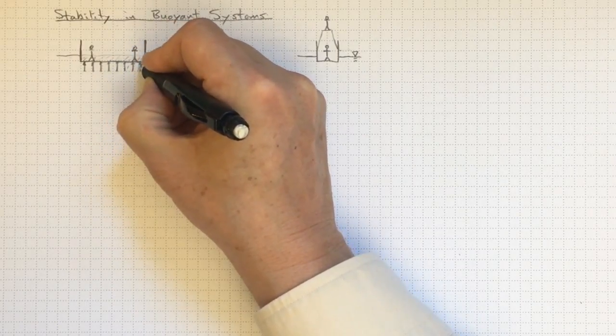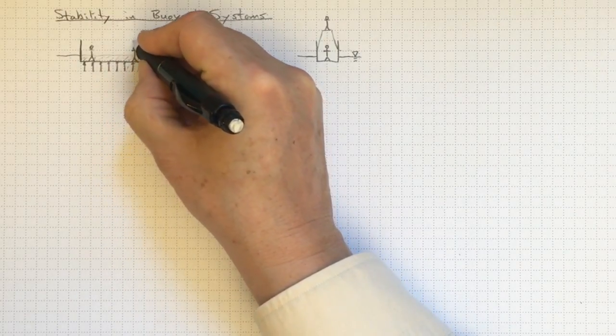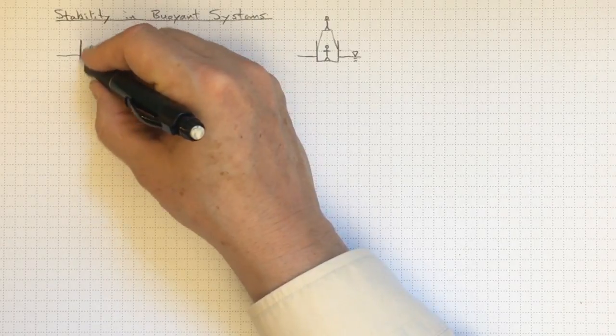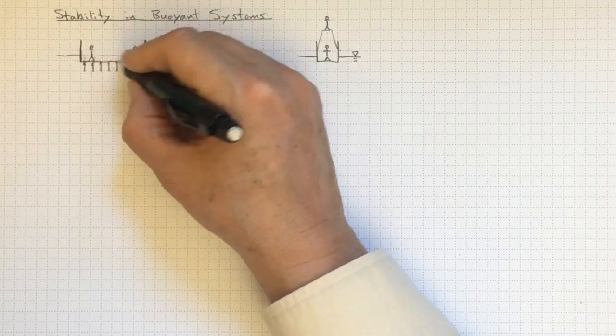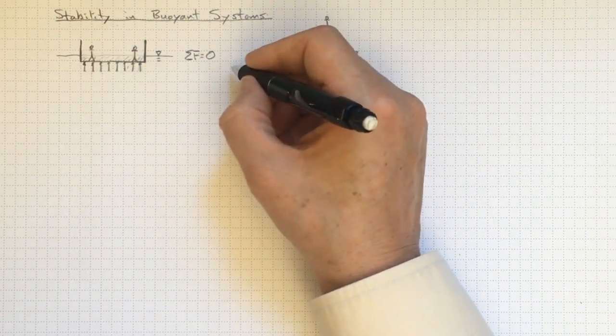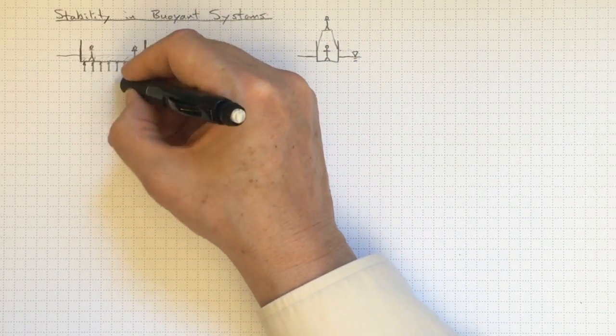There's some positive pressure force acting up, producing buoyancy. And there's some negative gravitational force acting down, causing a downforce that offsets that buoyancy. So no net forces in the vertical direction.